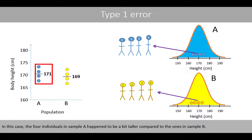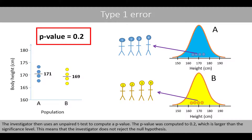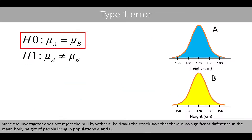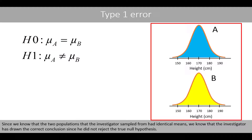In this case, the four individuals in sample A happen to be a bit taller compared to the ones in sample B. The investigator then uses an unpaired t-test to compute the p-value. The p-value was computed to 0.2, which is larger than the significance level. This means that the investigator does not reject the null hypothesis and draws the conclusion that there is no significant difference in the mean body height of people living in population A and B. Since we know that the two populations had identical means, we know that the investigator has drawn a correct conclusion since he did not reject the true null hypothesis.